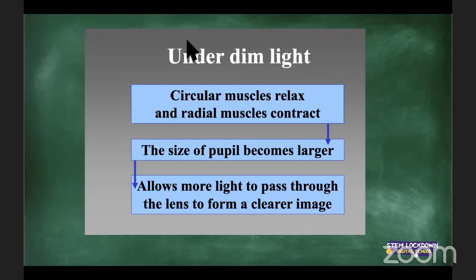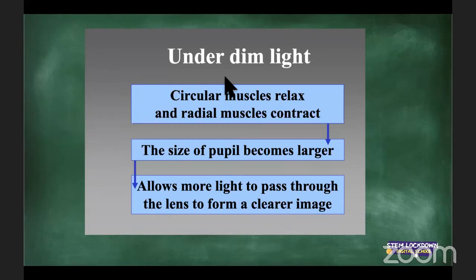Regarding corneal arcus: usually that is caused by high cholesterol — there are cholesterol deposits around the iris forming a little ring. It doesn't affect your vision; doctors use it to help diagnose high cholesterol.